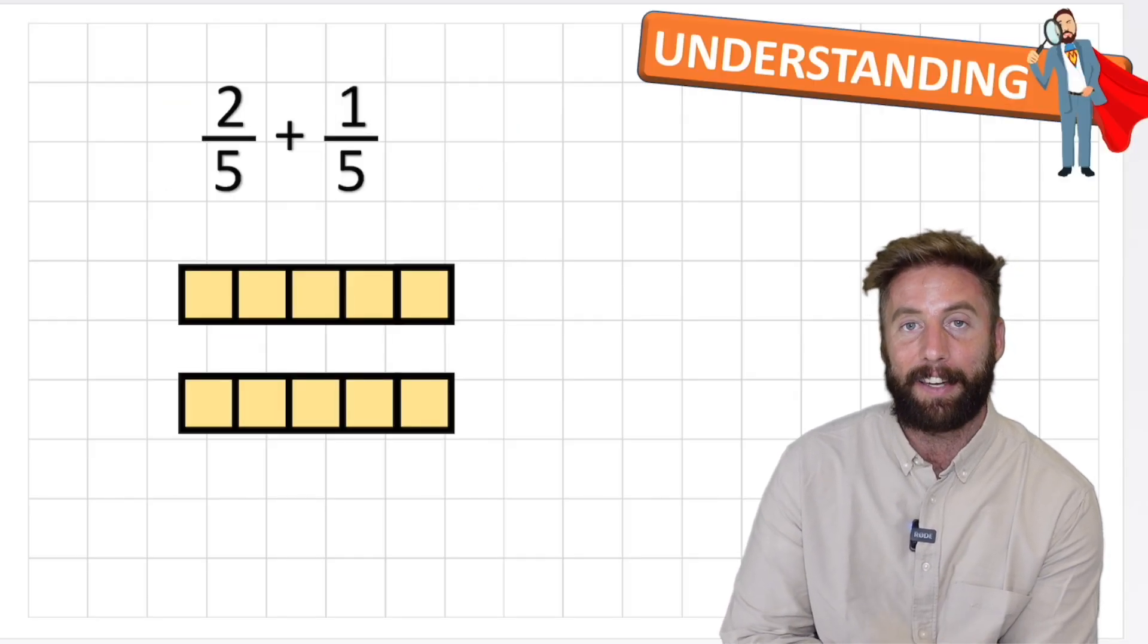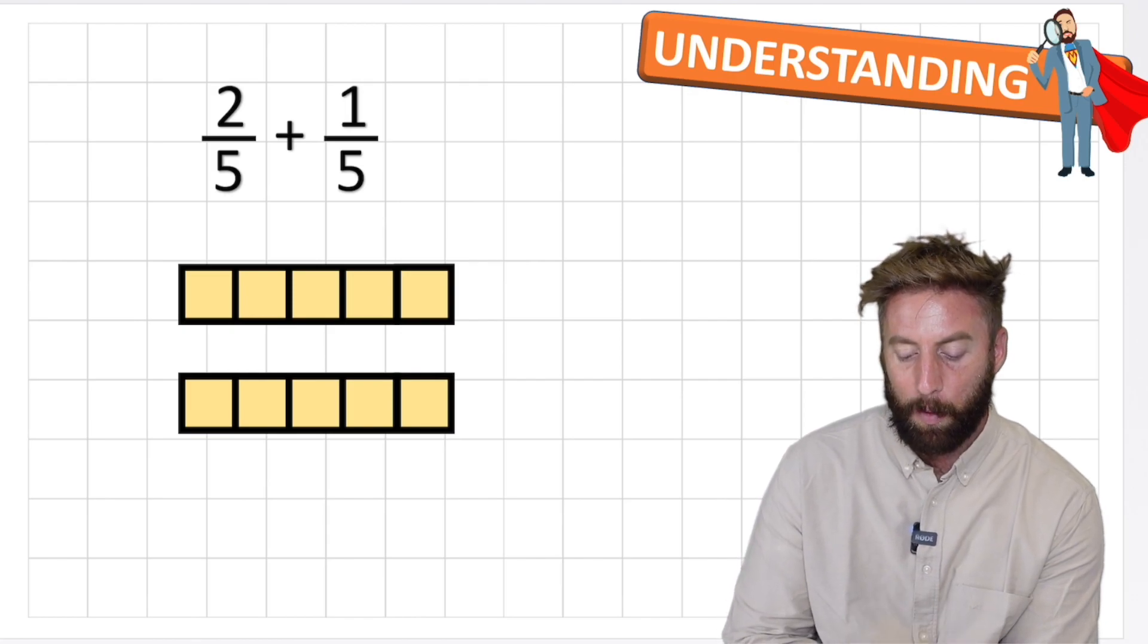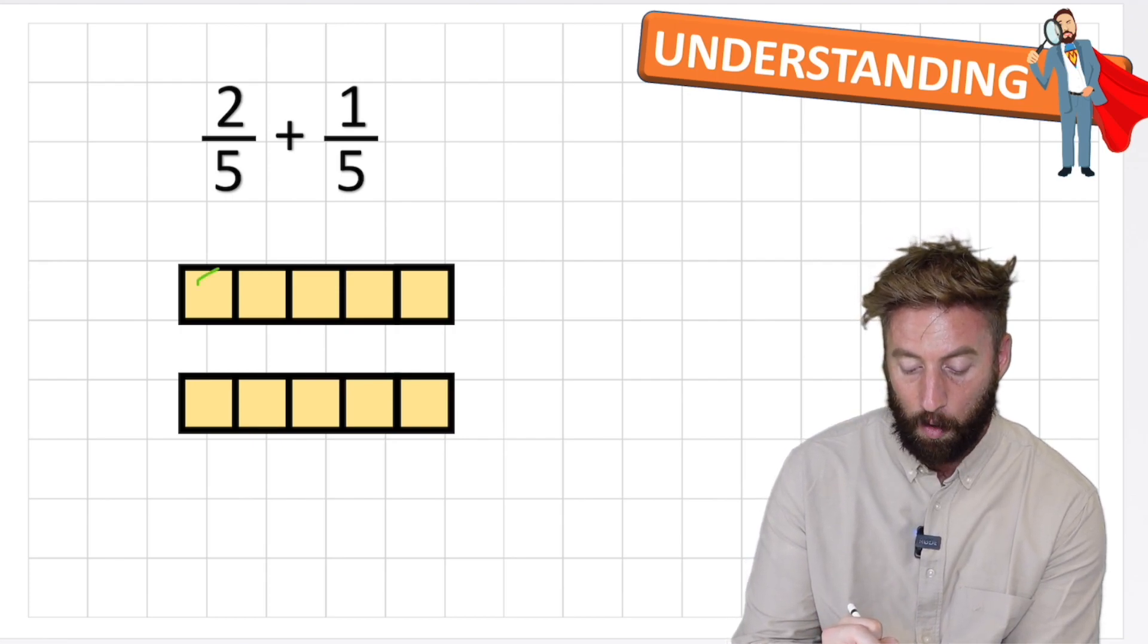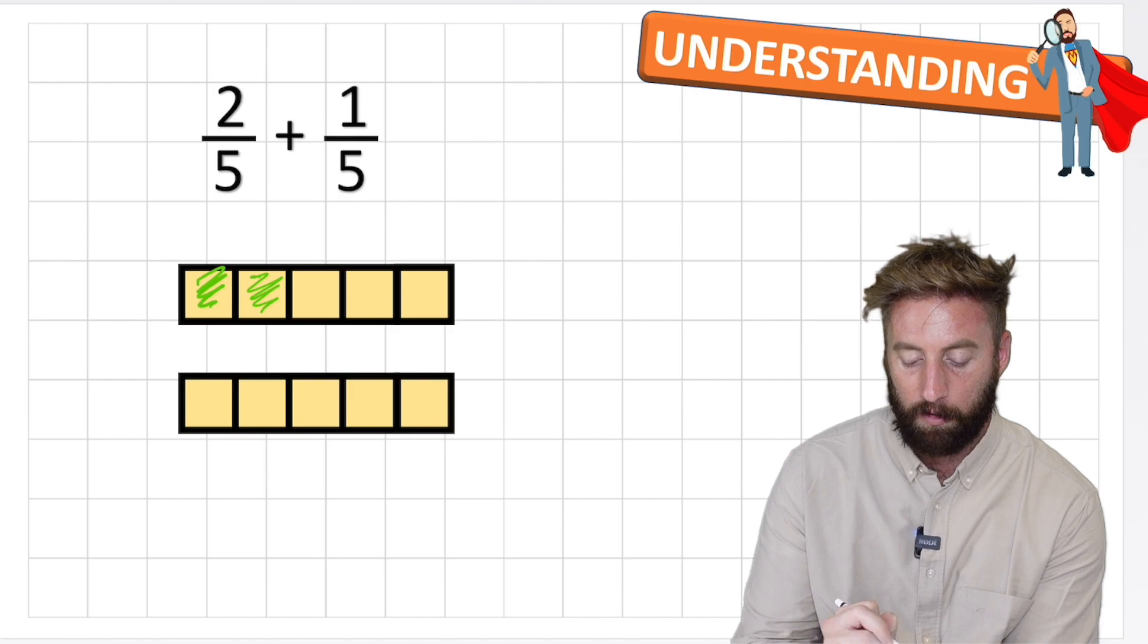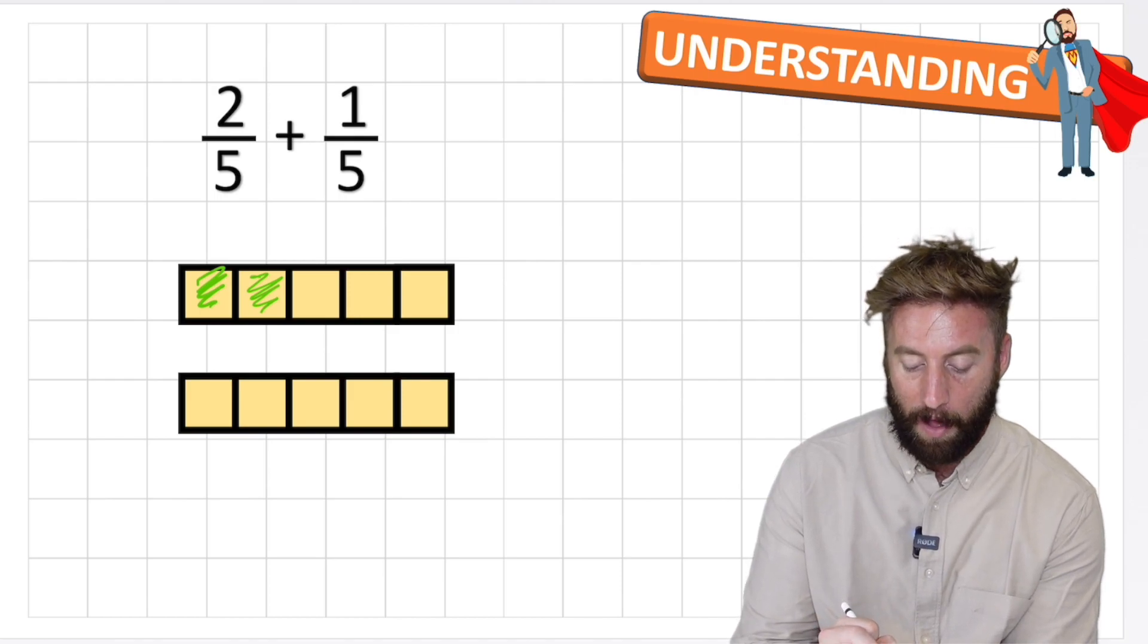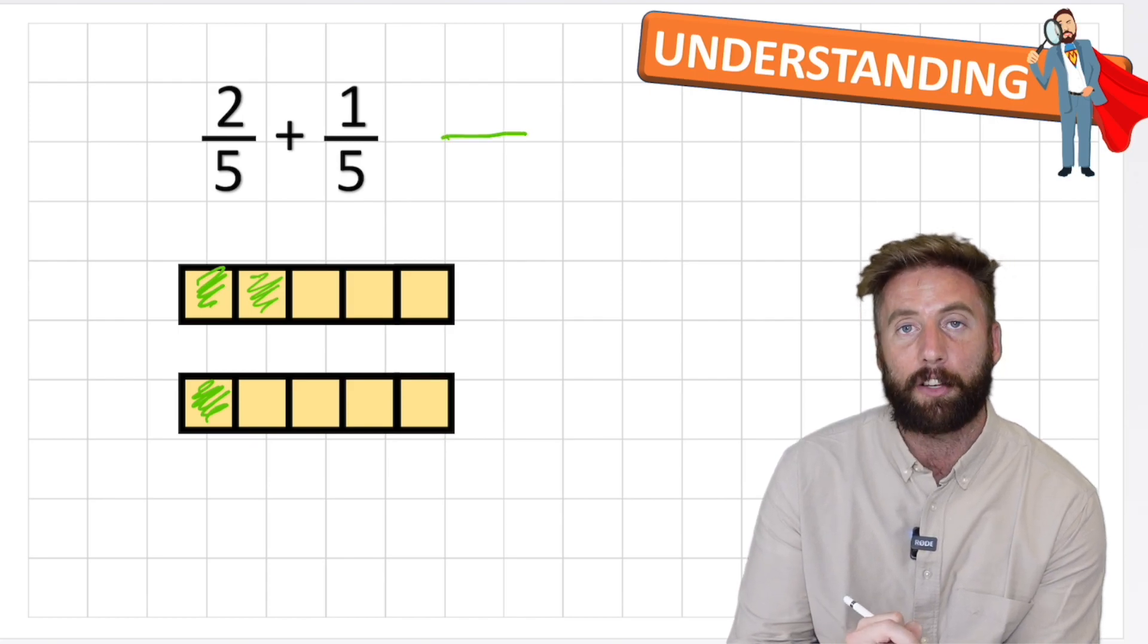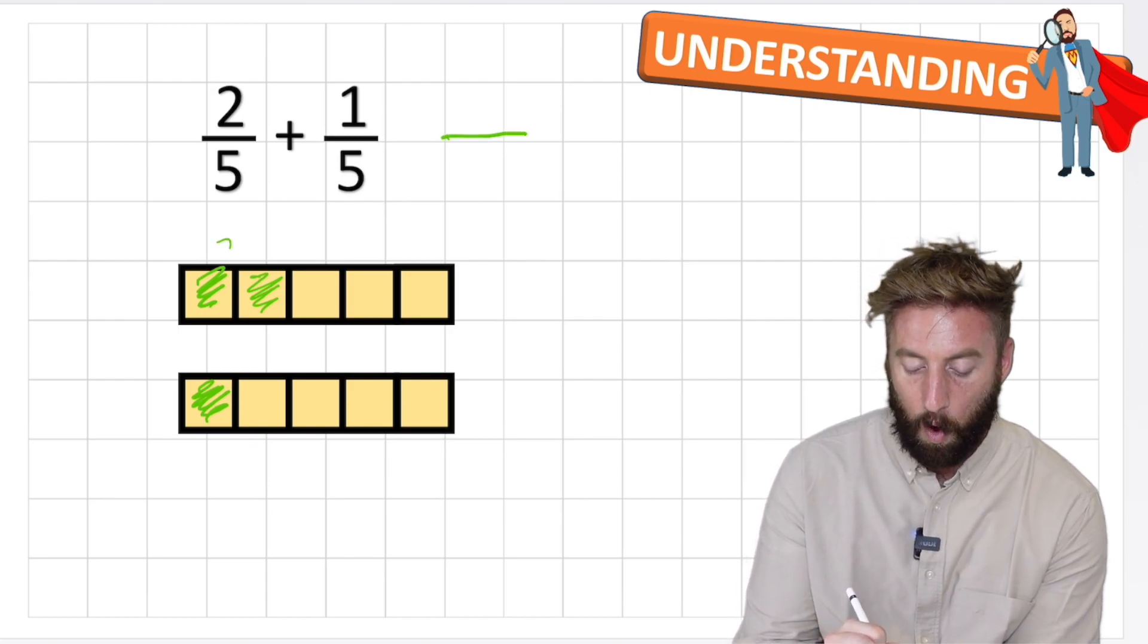So let's look at it in a different way, and let's look at it with the bar models again. So I have two fifths and I'm adding one fifth. So in my first bar model I can see I have one, two fifths, and in my second one I have one fifth. So how many do I have all together? Well I think I can answer my numerator, I have one, two,